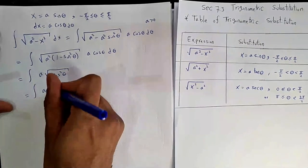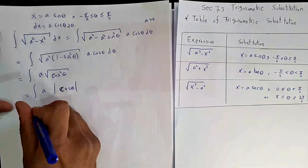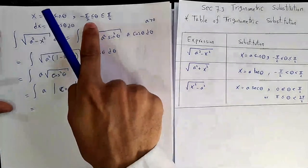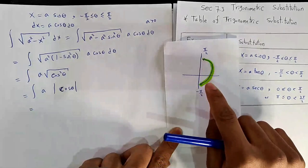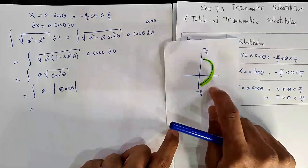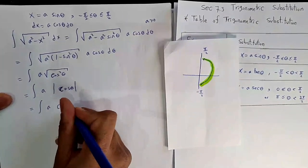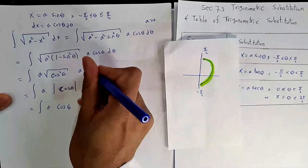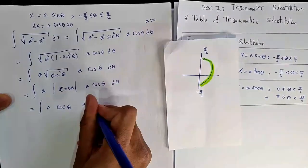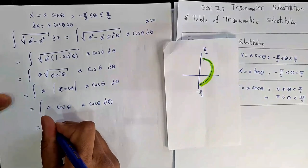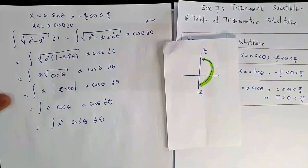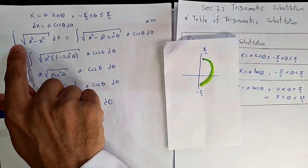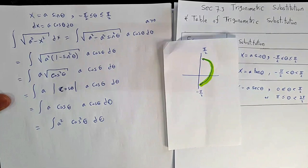This simplifies to a|cos θ|. Since θ ∈ [-π/2, π/2], we are in the first or fourth quadrant where cosine is positive, so we get a cos θ. And dx = a cos θ dθ. So the integral becomes ∫a² cos²θ dθ, which is a trigonometric integral already covered in section 7.2.